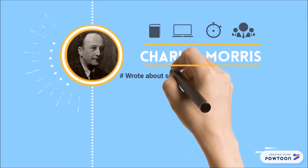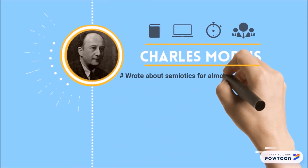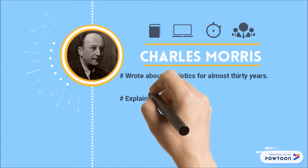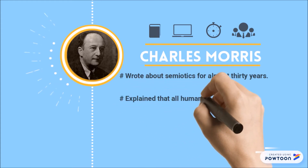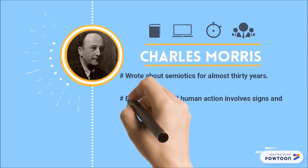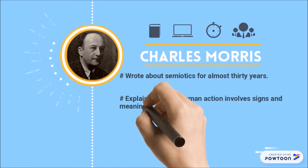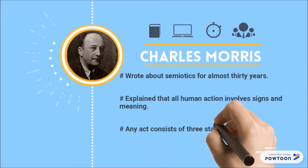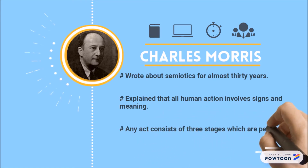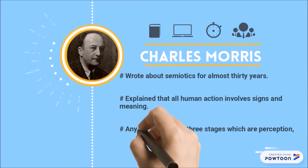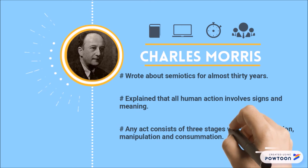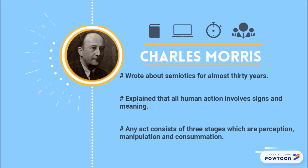He wrote about semiotics for almost 30 years. He explained that all human action involved signs and meaning, and any act consists of three stages: perception, manipulation and consummation.